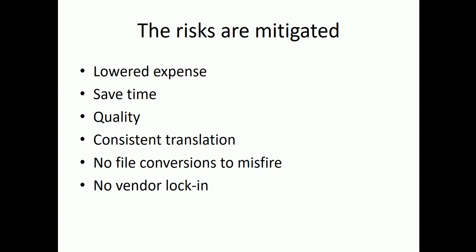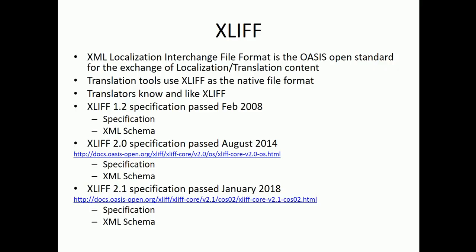XLIF is XML Localization Interchange File Format. It's an OASIS standard for exchanging localization and translation content. Translation tools use XLIF as their native file format — translators know and like XLIF. XLIF 1.2 was passed in February 2008 with a schema and specification. XLIF 2.0 was passed in August 2014. XLIF 2.1 was just passed in January 2018, with a schema and XML specification.